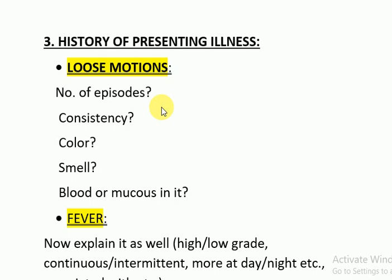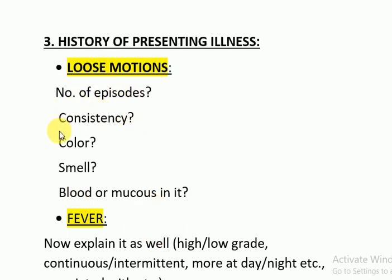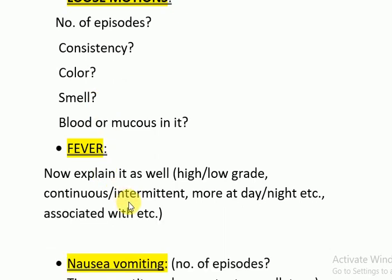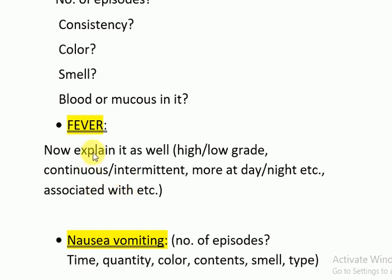The history of presenting illness is actually the elaboration of the main complaints. For example, if the parents told you that the child is having loose motion for the last two hours, you would elaborate it by asking: the number of episodes, the consistency, the color, the smell, blood or mucus in the stool. All these questions should be asked and written in the history. Similarly, for fever lasting one hour, you will elaborate that as well.